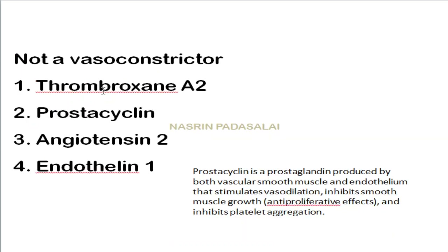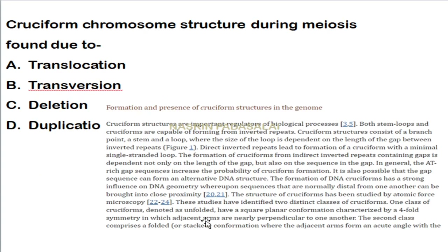Which of the following is not a vasoconstrictor? The correct answer is prostacycline. Prostacycline is a prostaglandin produced by smooth muscle cells and also by the endothelium. It stimulates vasodilation, has an anti-proliferative effect by inhibiting smooth muscle growth, and also inhibits platelet aggregation.